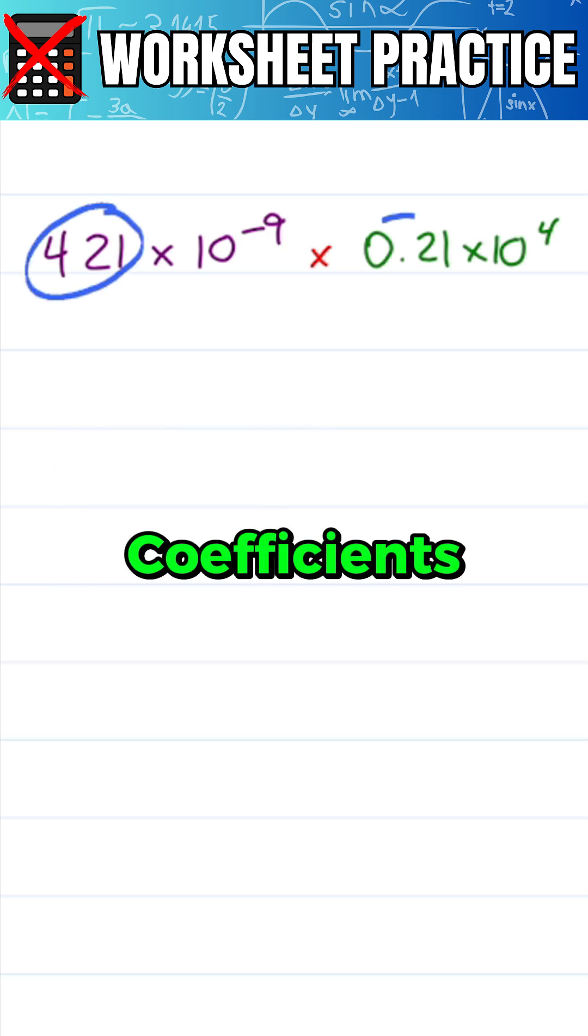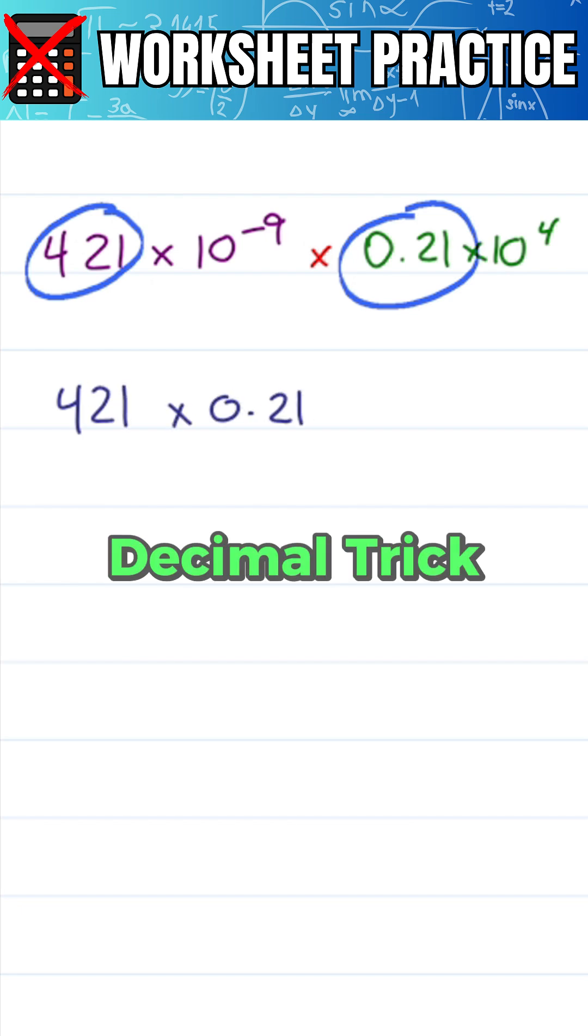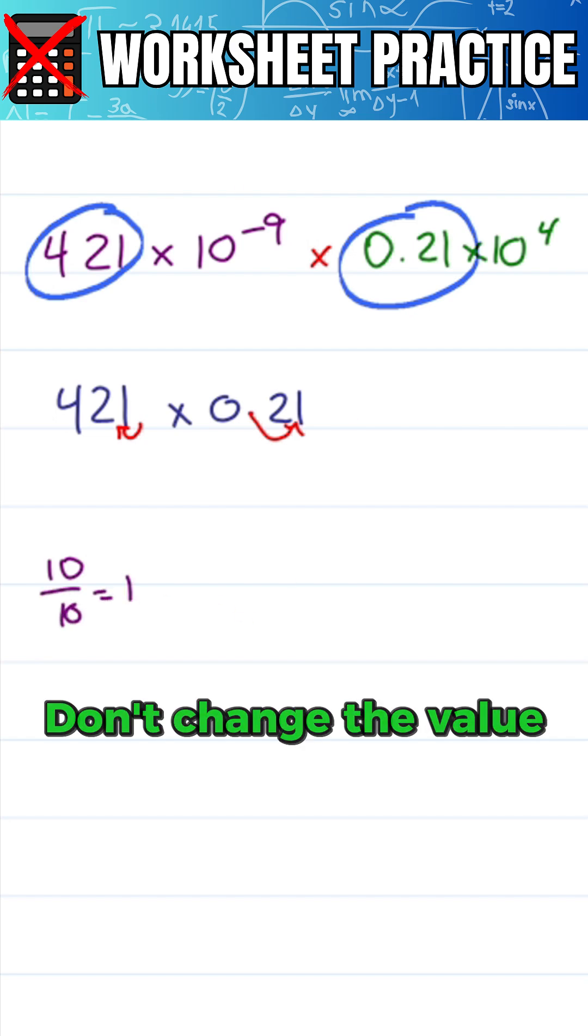So let's start with the coefficients 421 times 0.21. Let's simplify it with a decimal trick that tells us if you move the decimal once to the right and another one once to the left, you're multiplying by 10 over 10 which is 1 and you don't change the value.